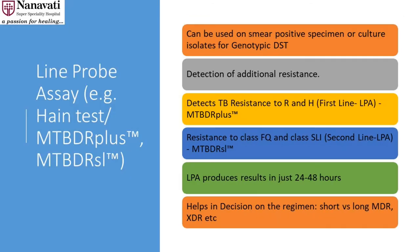Line probe assay picks up additional resistance. We usually do the line probe assay when GeneXpert shows rifampicin resistance or rifampicin sensitivity. If rifampicin resistant, we do the second-line LPA to check resistance to fluoroquinolones and second-line injectables — the aminoglycosides. If rifampicin sensitive, we do a first-line LPA to check for resistance to isoniazid. The advantage of LPA is that it gives a result within 24 to 48 hours, helping decide whether to use a short-term MDR regimen or XDR treatment without waiting for cultures and DST.